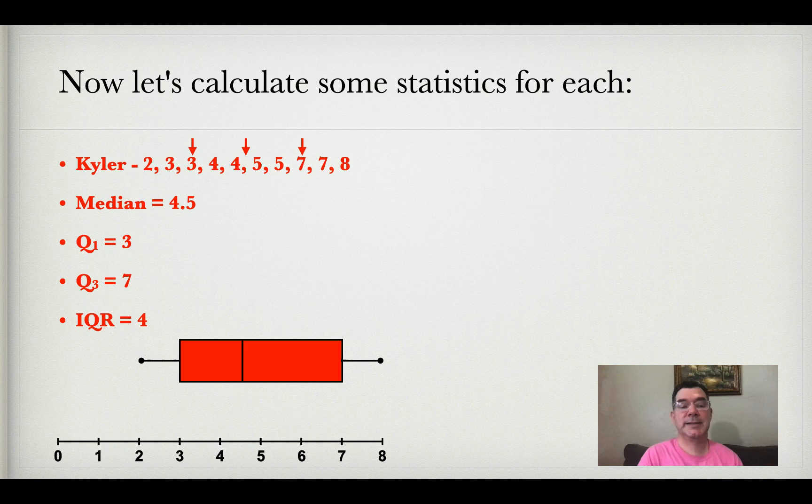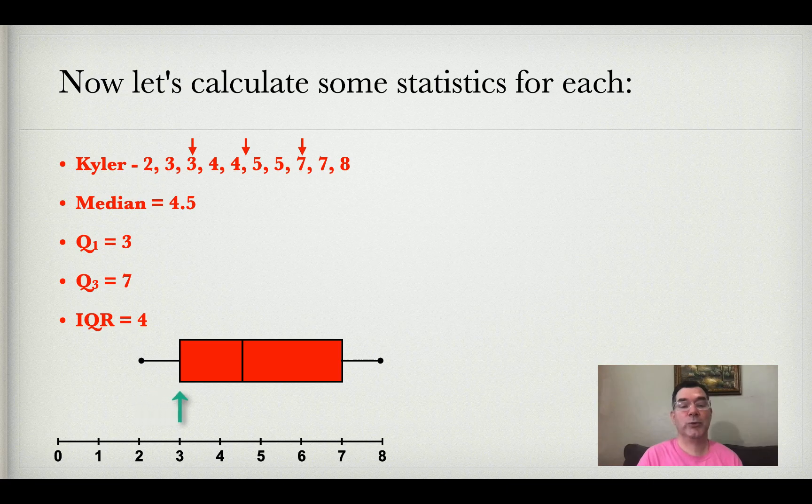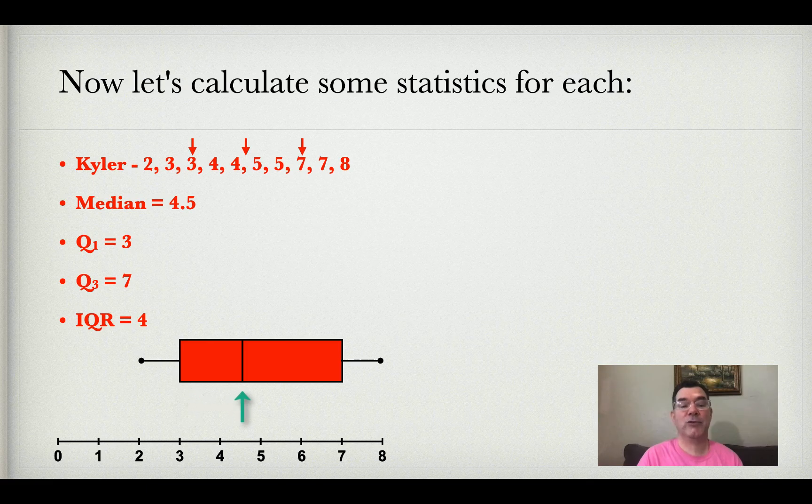There is the box and whisker plot that applies to Kyler. Notice how it's got the minimum of two represented by a dot, the lower quartile of three represented with the left edge of the box, and the median of 4.5 represented with that line inside the box.